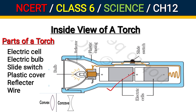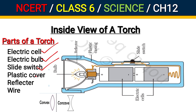In this way, in a torch there are many parts. Number 1 is the electric cell. Number 2 is the electric bulb. Number 3 is the slide switch. Number 4 is the plastic cover. Number 5 is the reflector. And number 6 is the wire.